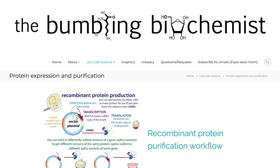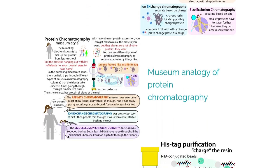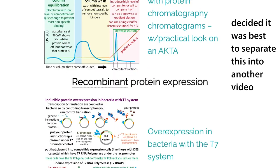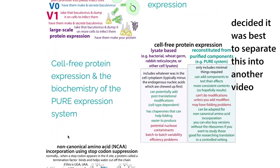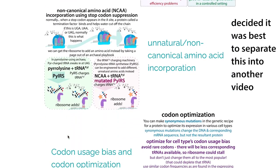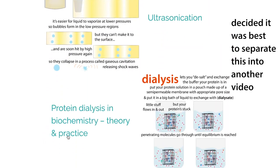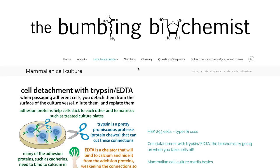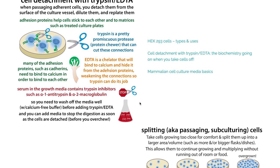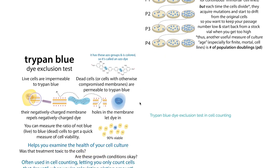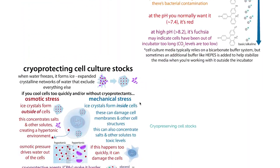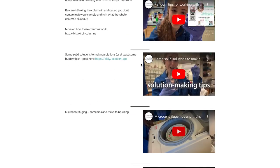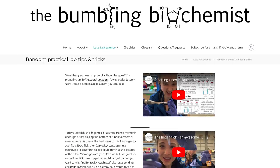I also have pages on protein expression and purification — how we can purify proteins typically using chromatography, putting them through columns filled with little beads and separating them based on how proteins interact differently with those beads because proteins all have different properties. I also have a page on mammalian cell culture — things like splitting cells, checking their health, and various lab tips and tricks.